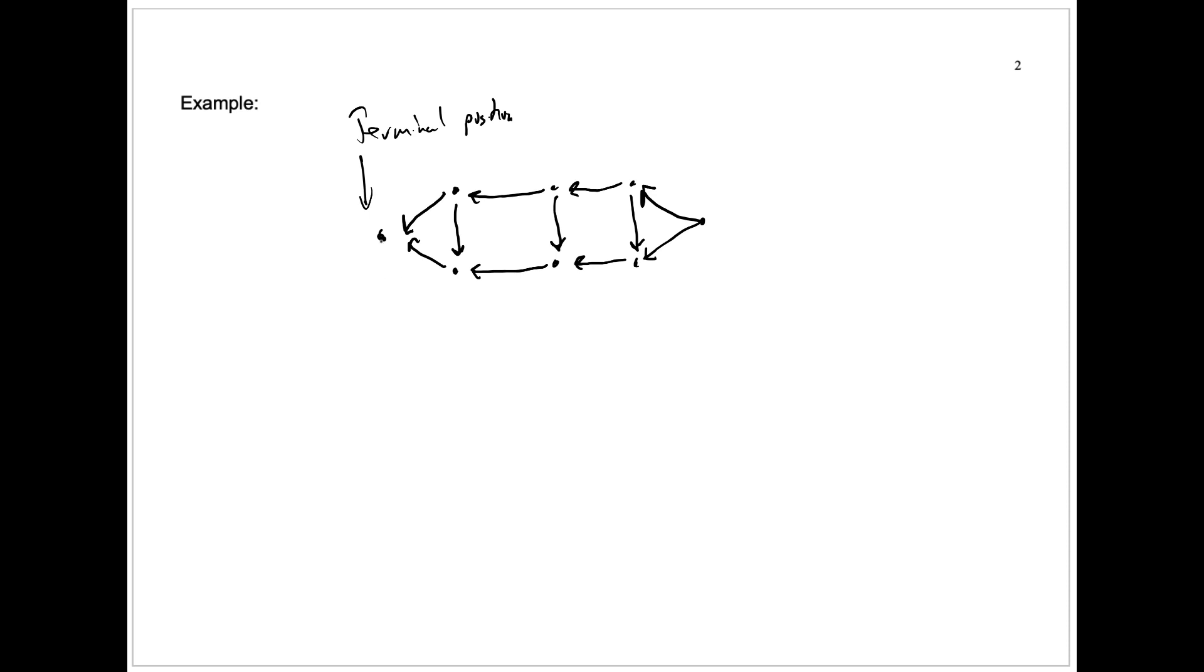There is no edge leading from this node. And so I'm going to write down this Sprague-Grundy function for each node just as a number next to the node. So for this node, g of that node is going to be zero.